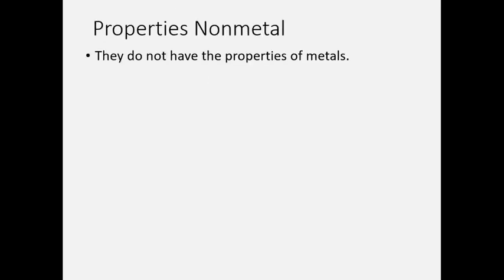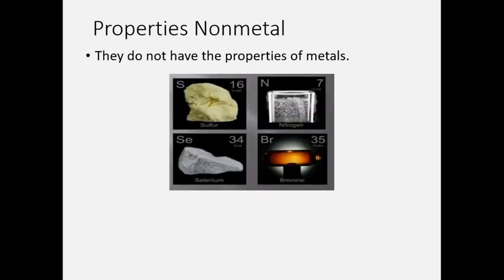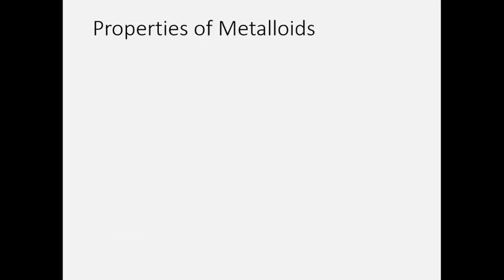The properties of non-metals: they do not have the properties of metals. Examples include sulfur, nitrogen, selenium, and bromine. Unlike metals, they gain electrons. Metals lose electrons, but non-metals gain electrons, and the charge is negative.